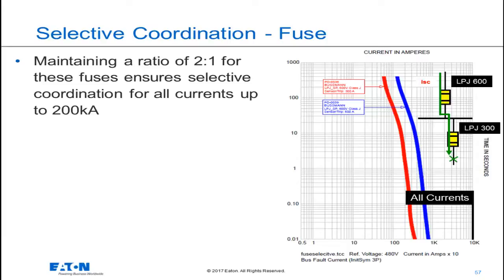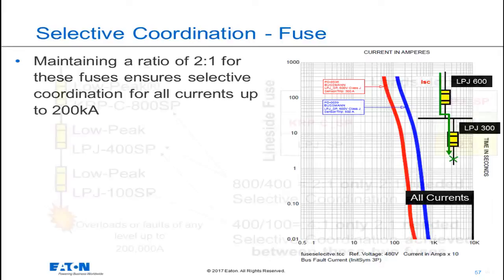So any fuse upstream of that LPJ-300, 600 amps and greater, will selectively coordinate for all short circuit currents.